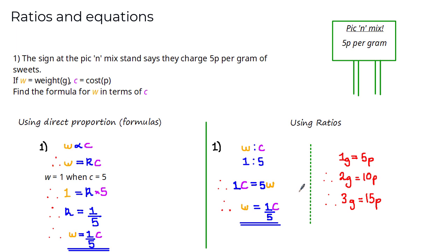The key step was deriving the equation from the ratio. There's a quicker method: set out your ratio with the two variables over their values, then cross multiply and put an equal sign in the middle. So from w:c = 1:5, cross multiplying gives 1 × c = 5 × w in just one step, quickly allowing you to solve the problem.